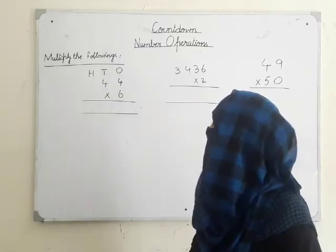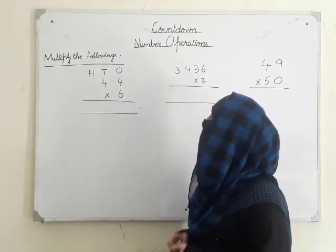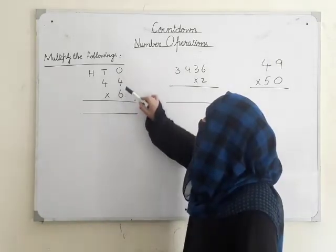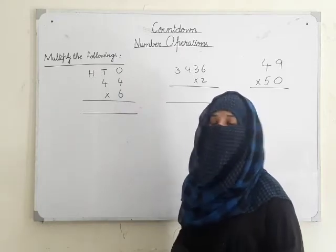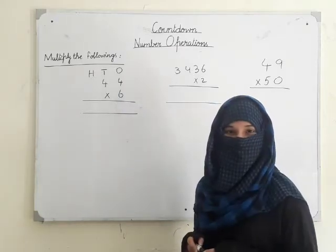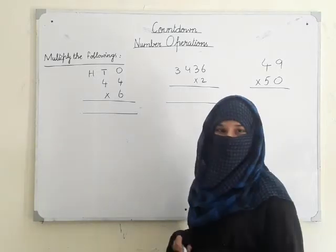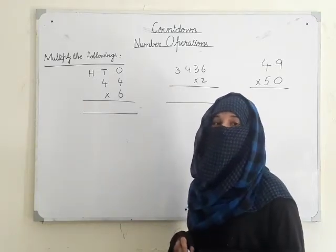Let's see. First of all, here we have a number 4 times 6. We will read the number for 4. 6 ones are 6, 6 twos are 12, 6 threes are 18, and 6 fours are 24.